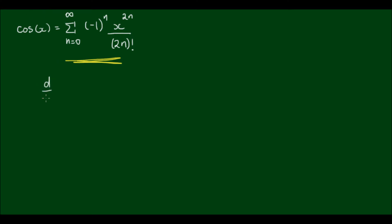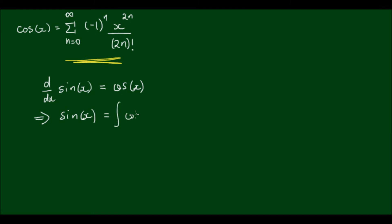We know that when we differentiate sine of x — writing the differential as d/dx of sine x — this is equal to cosine x. So it follows that sine x would be the integral of cosine x with respect to x, which means it would be equal to the integral of the Maclaurin series for the cosine of x.